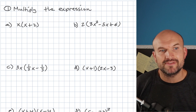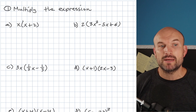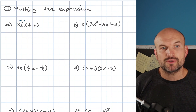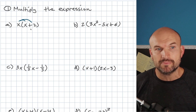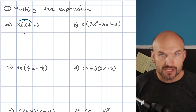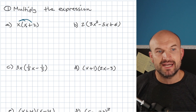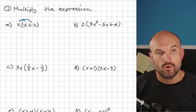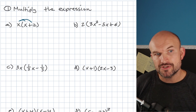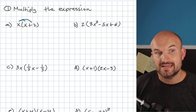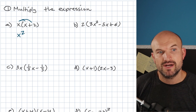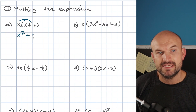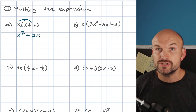Whenever we have something outside of parentheses, we need to make sure we multiply that times both terms inside the parentheses, as long as they're separated by addition or subtraction. So in this case, I have X times X, which gives me X squared.